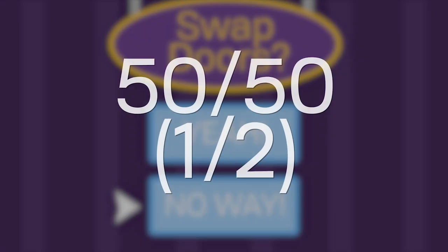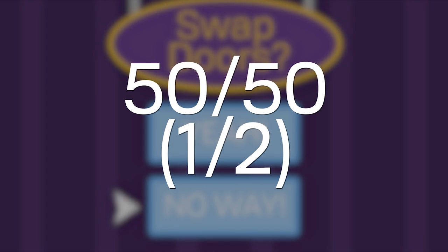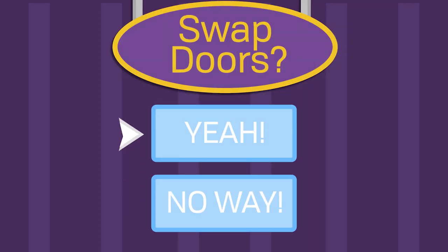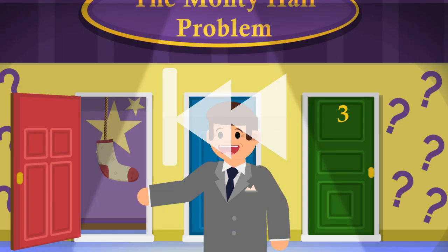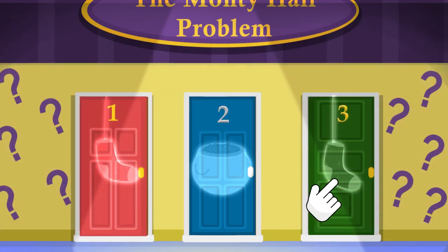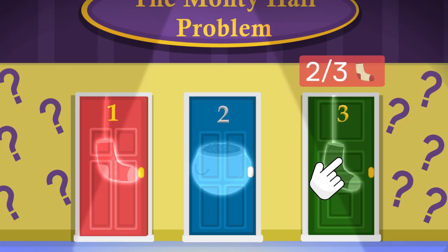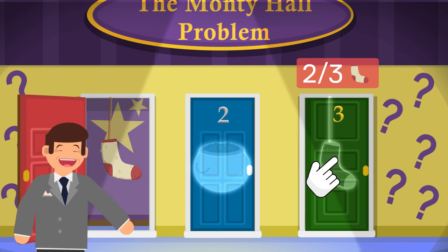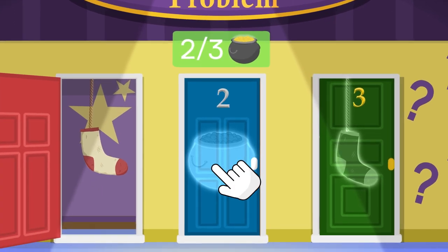It seems like a 50-50 chance, as there are only 2 doors left. But not so fast — changing doors doubles our chance of winning. Here's why. Let's rewind and put on our X-Ray Specs. There is a 2 in 3 chance our first guess was wrong, because there are 2 socks and only 1 pot of gold. So when Monty reveals an incorrect option, 2 out of 3 times we will be swapping to the right door.